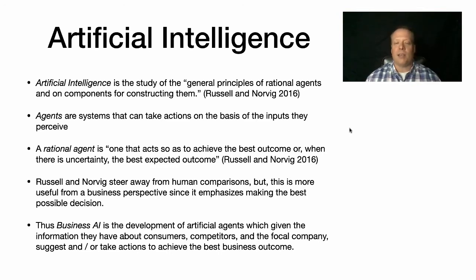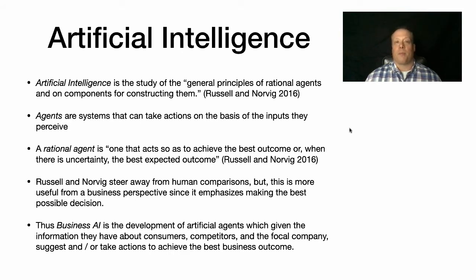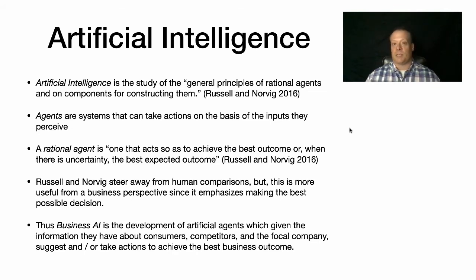Russell and Norvig specifically steer away from human comparisons, but I think that's actually more useful from a business perspective. We're not going to define intelligence as what a human would do. Instead, we're going to define intelligence as making the best possible decision. Thus, business AI is the development of artificial agents which, given the information they have about consumers, competitors, and the focal company, suggest and/or take actions to achieve the best business outcome.